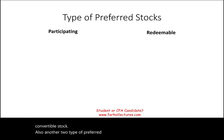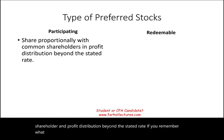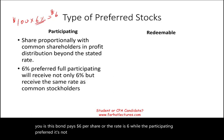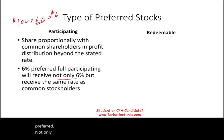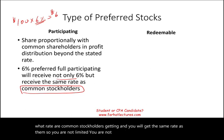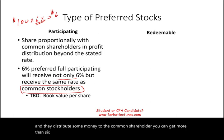Two more types are participating and redeemable preferred stock. Participating means the preferred shareholder shares proportionally with common shareholders in profit distributions beyond the stated rate. For example, with 6% fully participating preferred, you're not limited to just 6% — you receive the same rate as common stockholders. If the company makes a lot of money and distributes more to common shareholders, preferred shareholders can receive more than 6%.